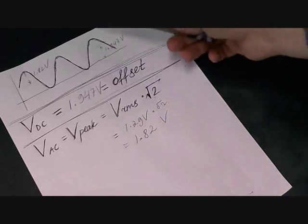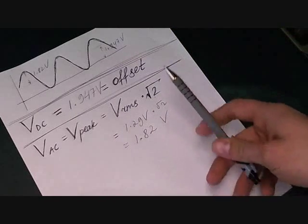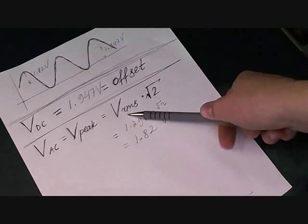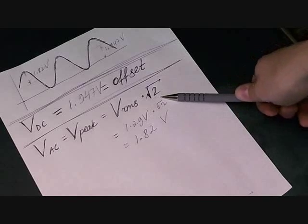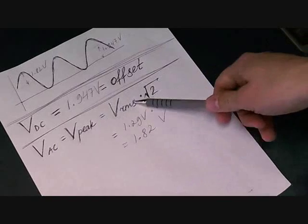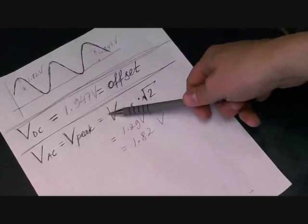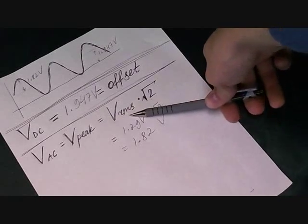So we know we're using a sine wave, so we multiply it by root 2. But if you have a sawtooth wave, for example, you're going to have to multiply it by root 3. And if it's a square wave, the measurement that you actually get is your V peak measurement. So it's just going to be VRMS.